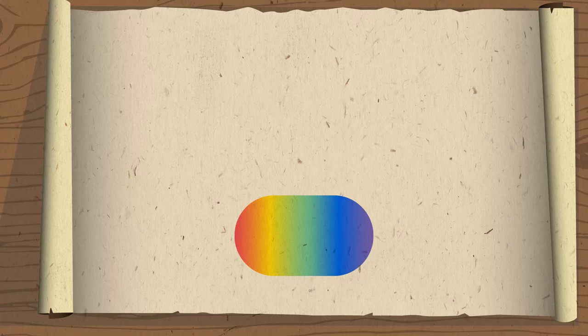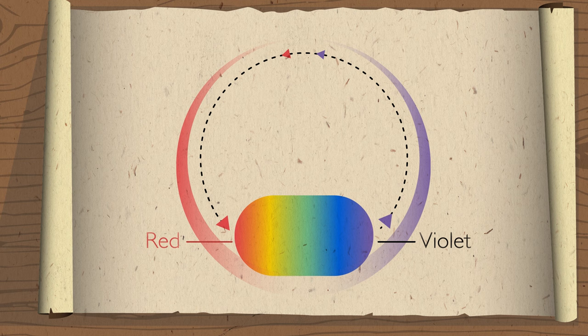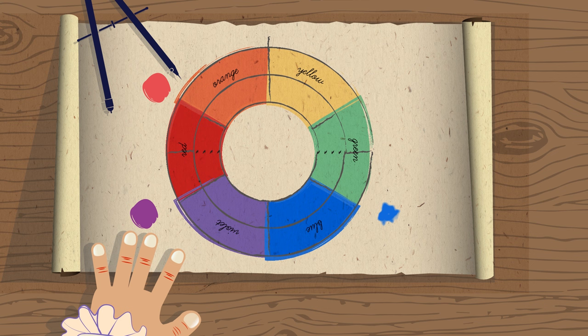Developing this idea further, Newton took the violet end of the spectrum and connected it to the red starting point, creating the first color wheel. Newton's color wheel was widely used and became a core tool in theorizing how colors can blend to create other colors.